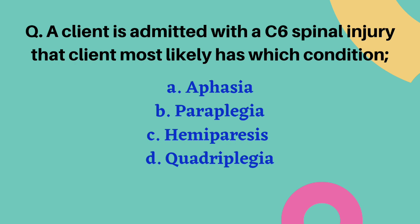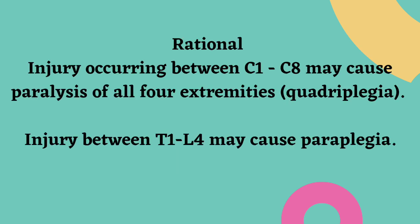A client admitted with C6 spinal cord injury most likely has which condition? Options are aphasia, paraplegia, hemiparesis, and quadriplegia. The correct answer is option D — quadriplegia. Injury occurring between C1 to C8 may cause paralysis of all four extremities, otherwise called quadriplegia. Injury between T1 to L4 may cause paraplegia.